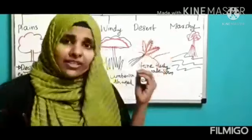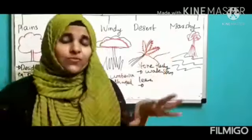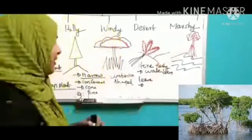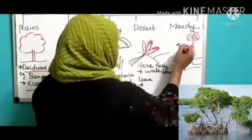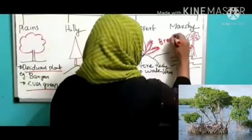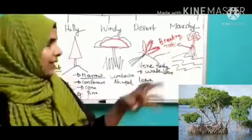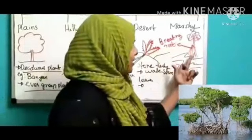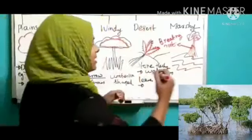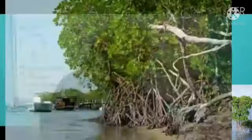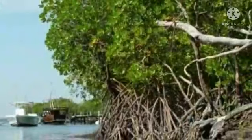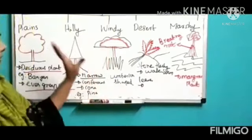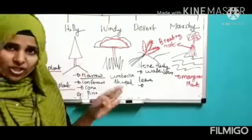Plants living in marshy regions grow in very wet, soft soil. Their roots are above the soil — we call these breathing roots, because the roots take in gases from the air. These plants are fully above the water. We also call them mangrove plants. So these are all the different adaptations seen in terrestrial plants. Thank you children.